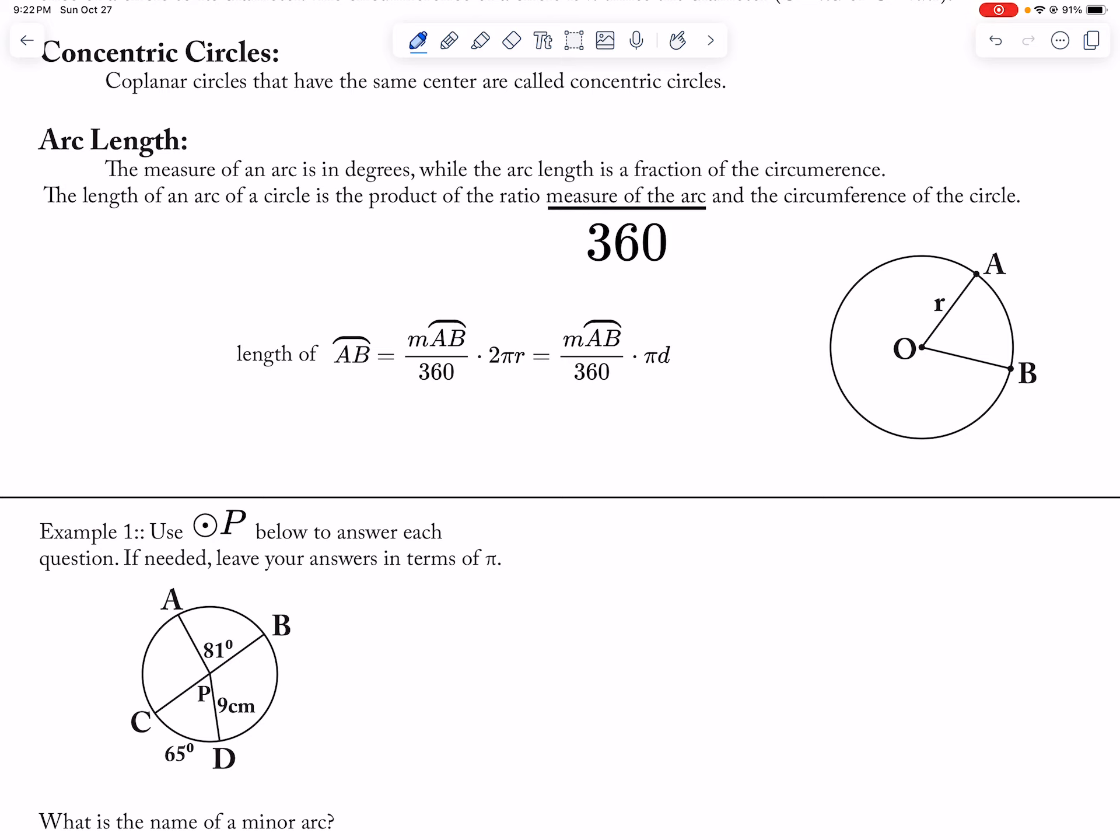So, if my arc here is, I guess pick an angle measurement, 60, right? Then to find the length of the arc, it's 60 over 360 times 2 times pi, and let's just call the radius 5. And so that's how I would set up arc length.